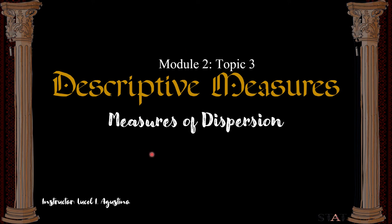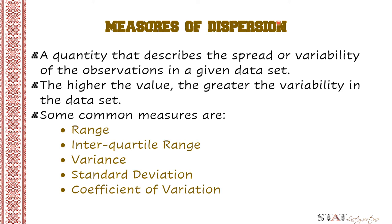Hi, dear students. Welcome to Statistics class. This is our Module 2, Topic 3, Measures of Dispersion under Descriptive Measures. Last topic, we talked about the Measures of Location or Central Tendency, and you learned that it gives us a typical value of our data set. So today, we'll be learning and talking about the Measures of Dispersion.